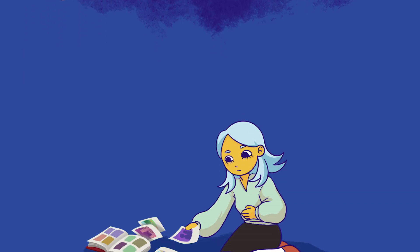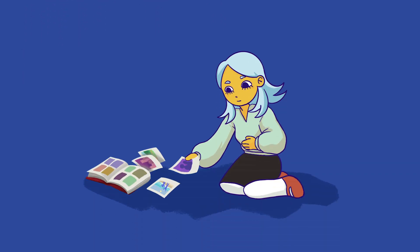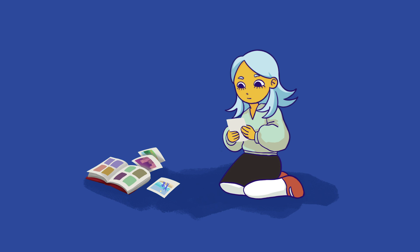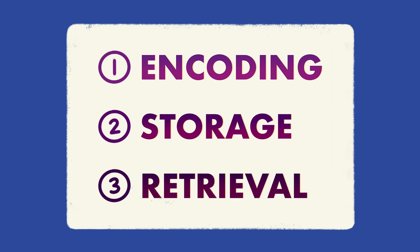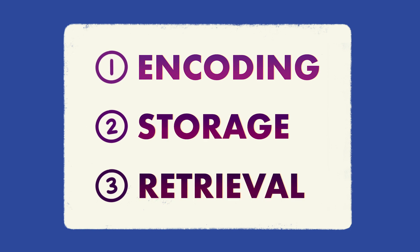To understand, let's first have a look at how memories are formed. This usually happens in three stages: encoding, storage, and retrieval.